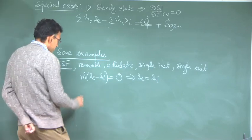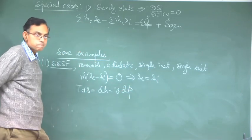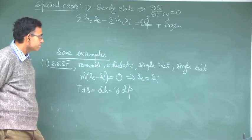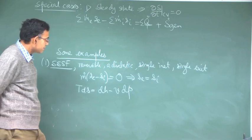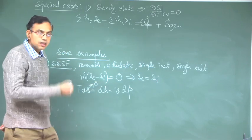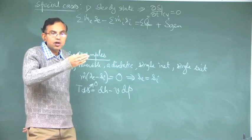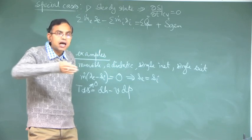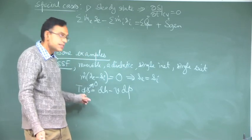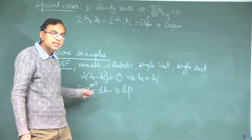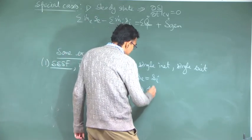Now we can use the TdS formula: TdS equals dh minus v dp. This can always be used across any property. In this case, because ds is zero between states i and e, any state in between also has ds equal to zero, since the process in equilibrium changes from state i to state e without creating any net change in entropy between successive states. So ds equals zero individually between steps, which means dh equals v dp.